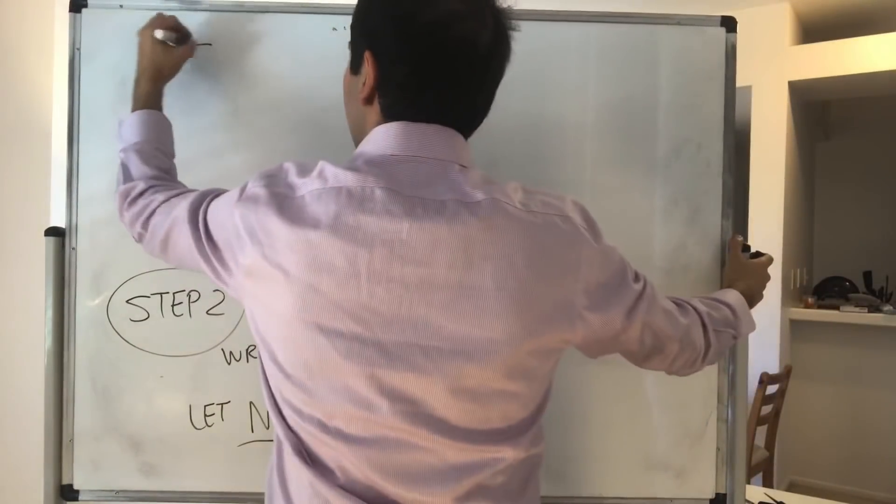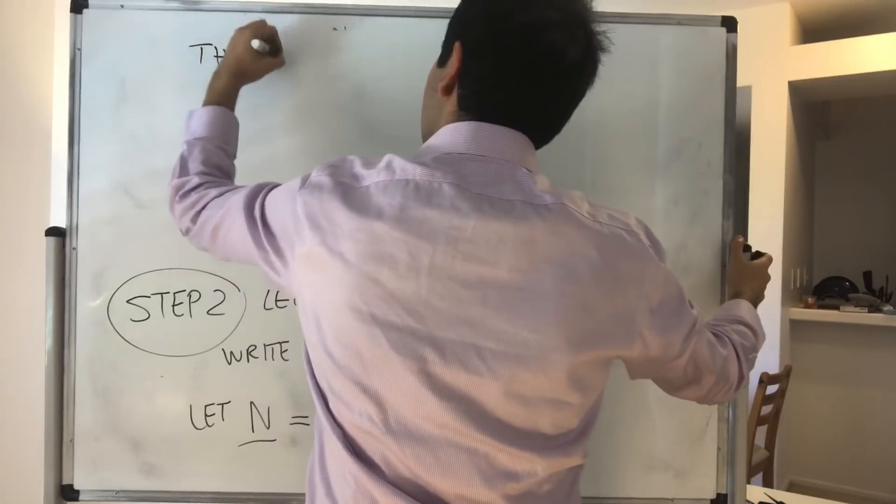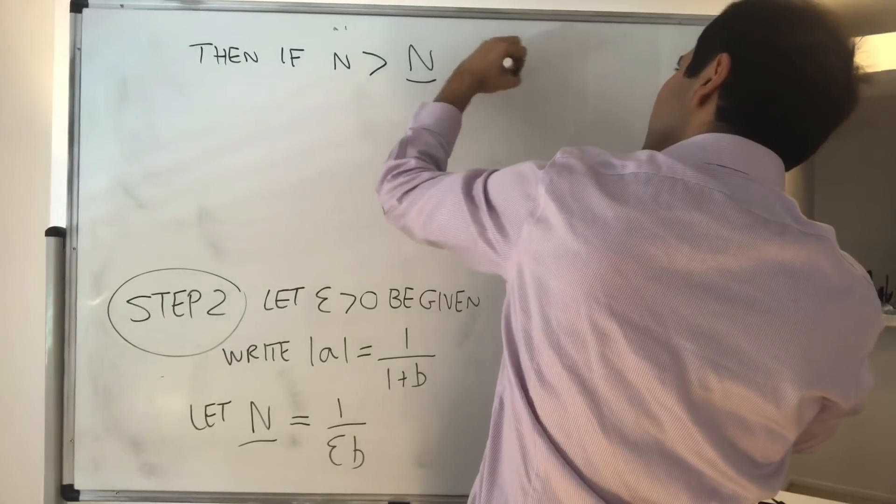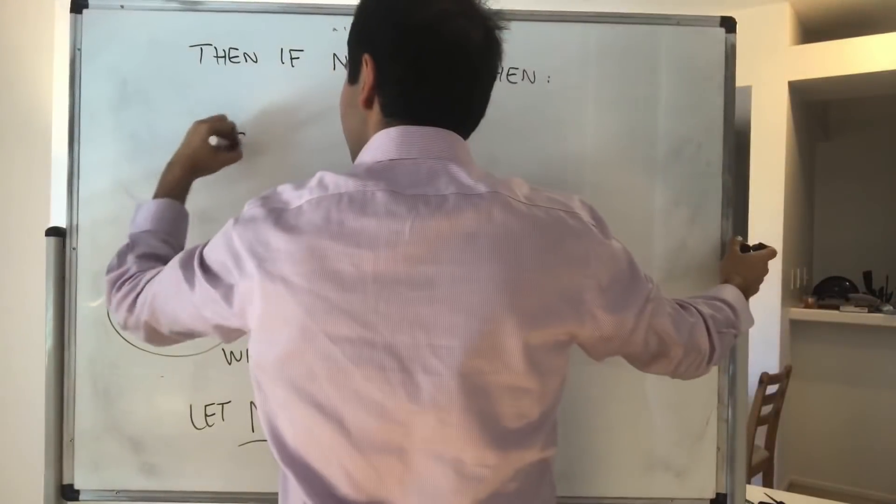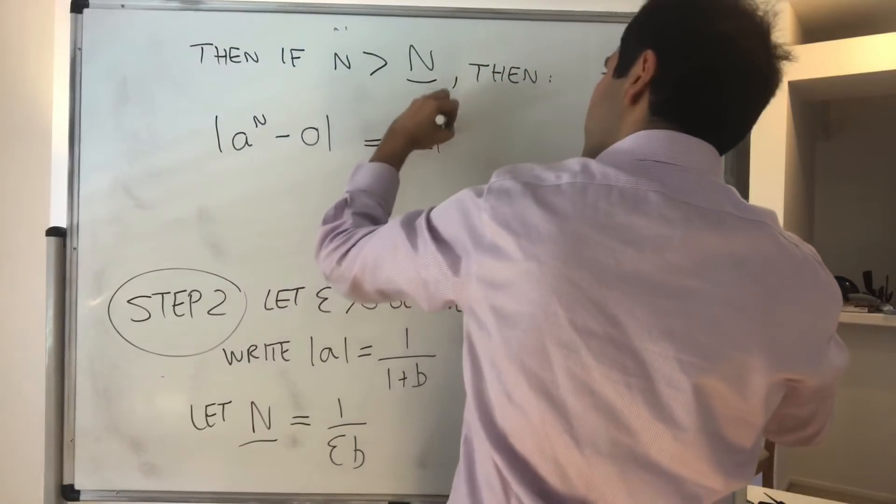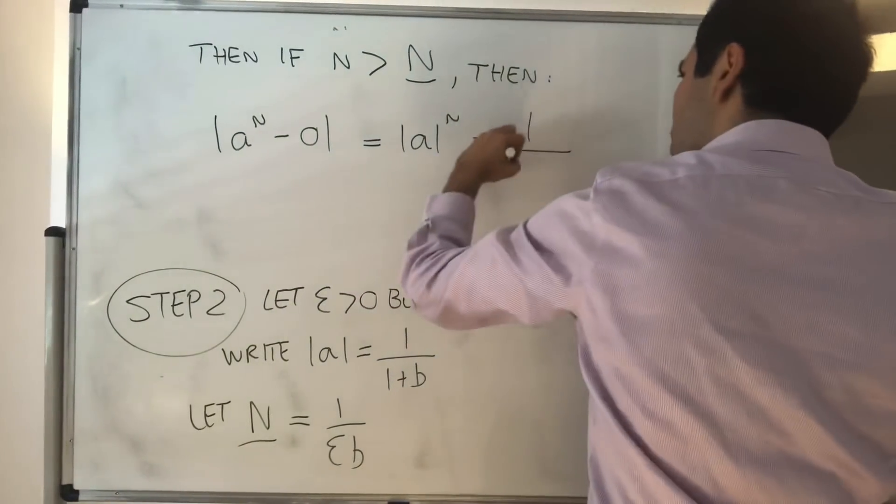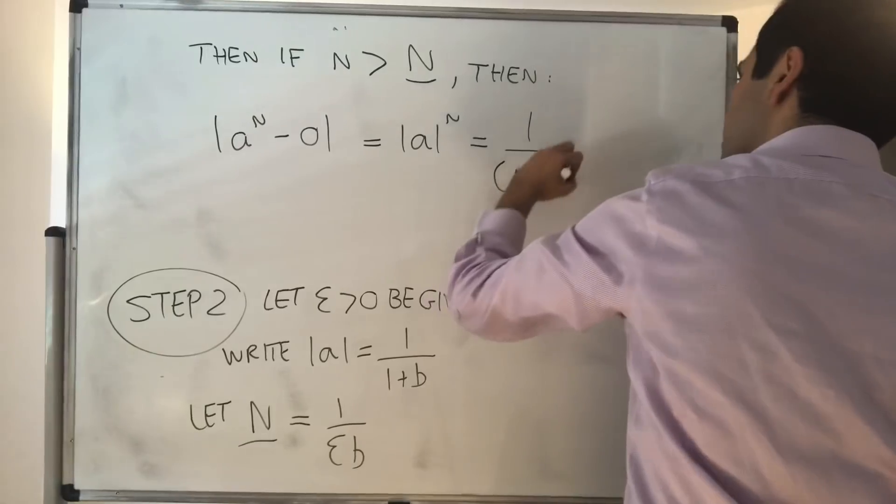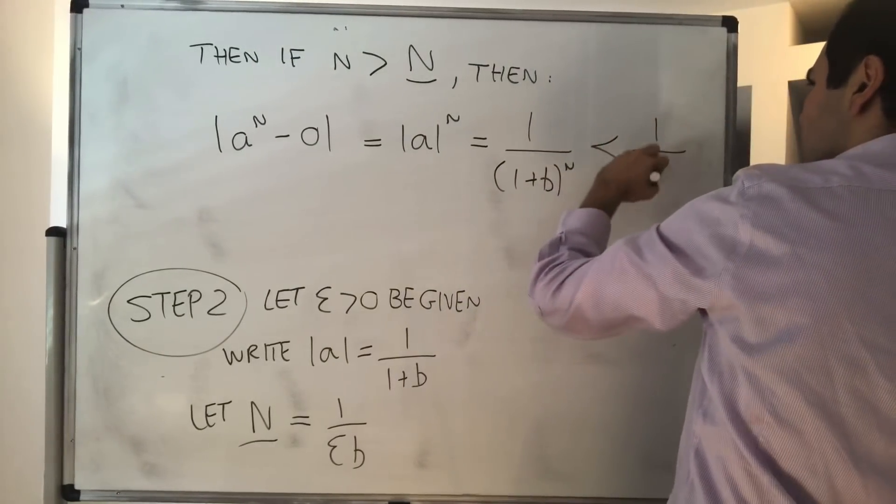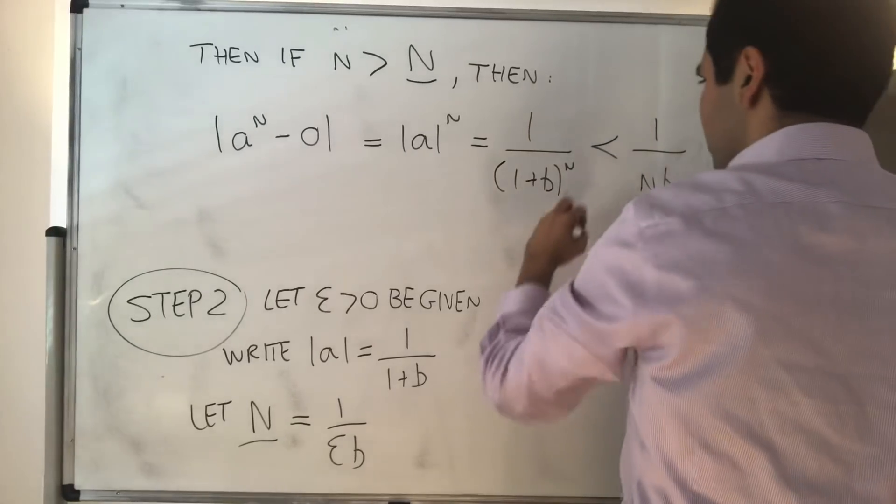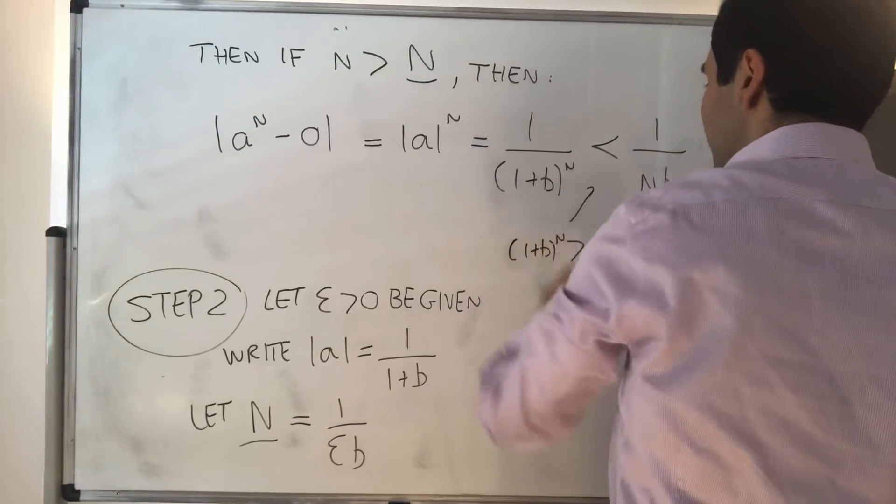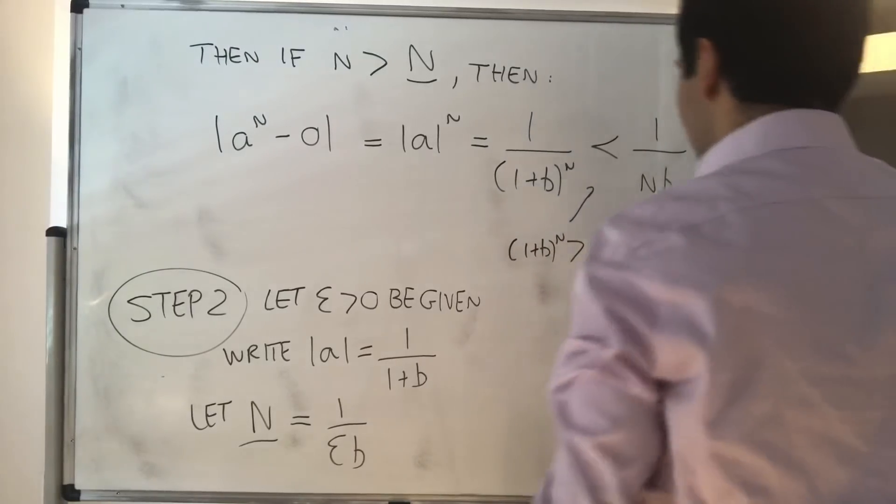Then if n is bigger than capital N, then the difference between our sequence and zero becomes a to the n, which becomes 1 over 1 plus b to the n, which becomes strictly less than 1 over nb, because 1 plus b to the n is strictly greater than nb.